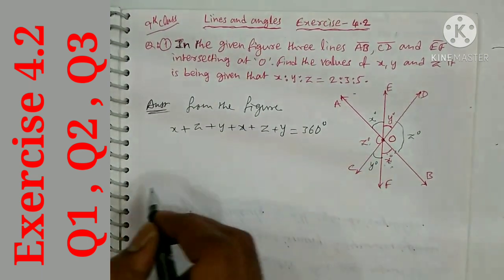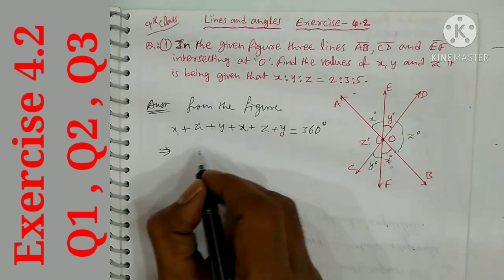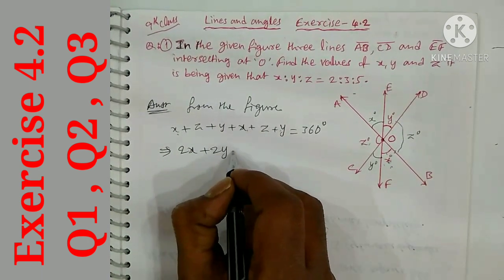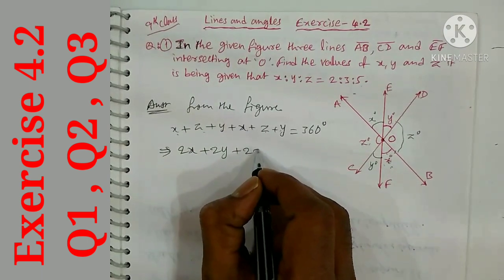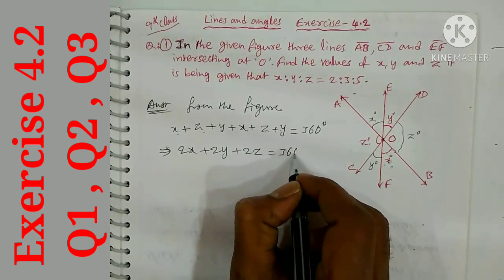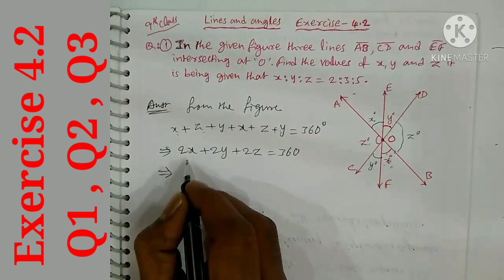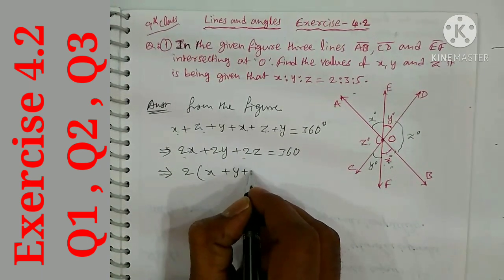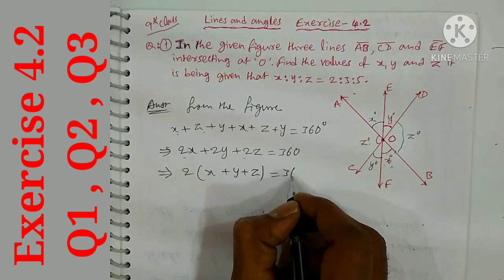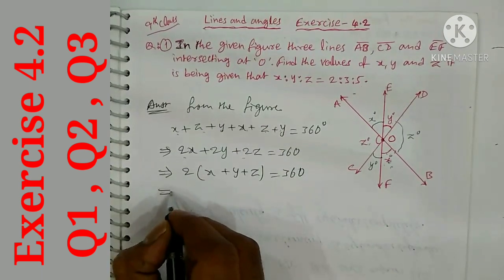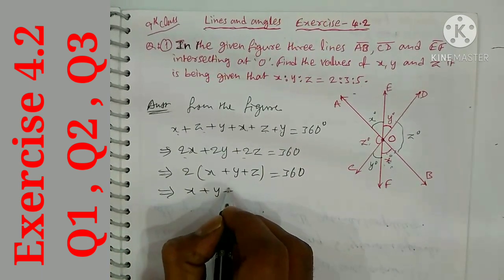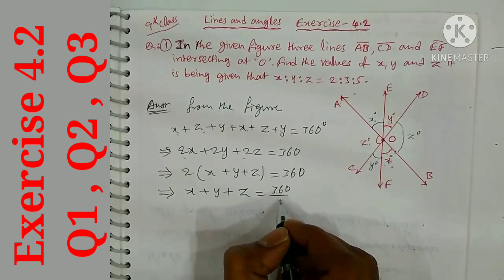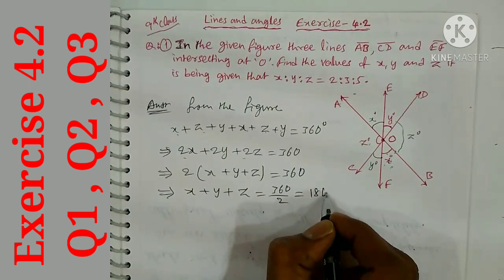Combining: 2x + 2y + 2z = 360 degrees. Taking 2 as common: 2(x + y + z) = 360, so x + y + z = 360 ÷ 2 = 180 degrees.